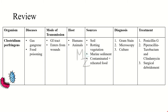Let's wrap up today's video. The organism discussed is Clostridium perfringens, responsible for two distinct diseases: gas gangrene and food poisoning. Transmission is via the GI tract for food poisoning, and via wounds for gas gangrene. Humans and animals are hosts; primary locations in humans are the colon and vagina, and in animals the colon. Sources are soil, rotting vegetation, marine sediment, and contaminated or reheated food. Diagnosis is based on gram staining, microscopy, and culture. Treatment includes Penicillin G, piperacillin-tazobactam, and clindamycin, as well as surgical debridement.